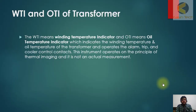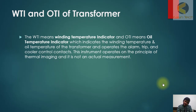We will discuss two new topics: Winding Temperature Indicator (WTI) and Oil Temperature Indicator (OTI) of a transformer. WTI indicates winding temperature and OTI indicates oil temperature of the transformer. These instruments operate the alarm, trip, and cooler control contacts, and they work on the principle of thermal imaging — not on actual direct measurement.